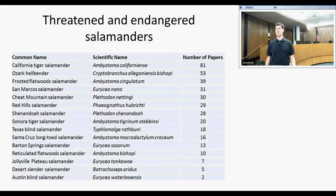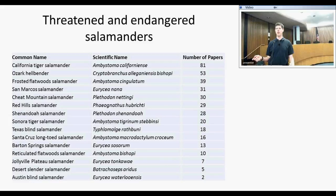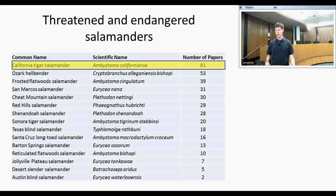The motivation for this talk: this is a list of all threatened and endangered salamanders in the United States. The relative numbers show that we know more about California tiger salamanders than any other threatened or endangered salamander in the U.S. We should be able to take that information and use it to create the best possible management practices.